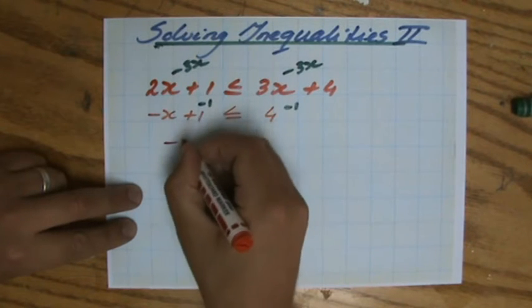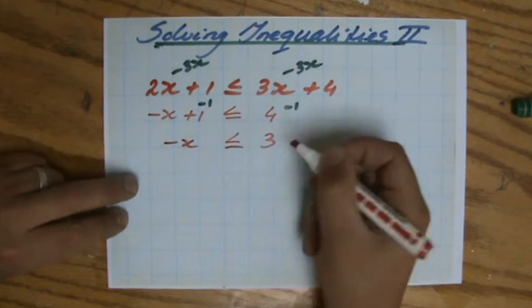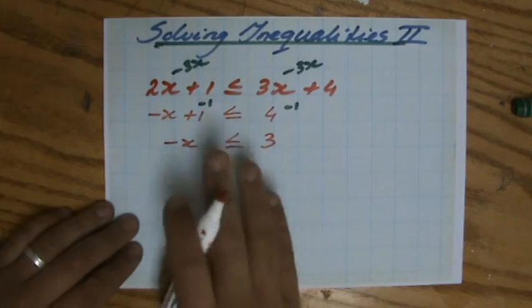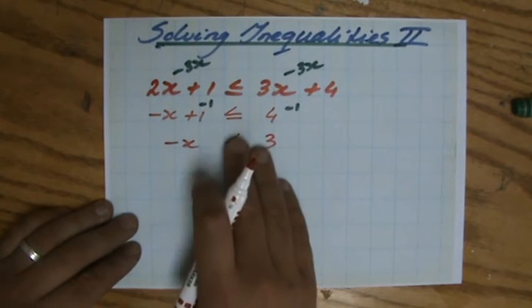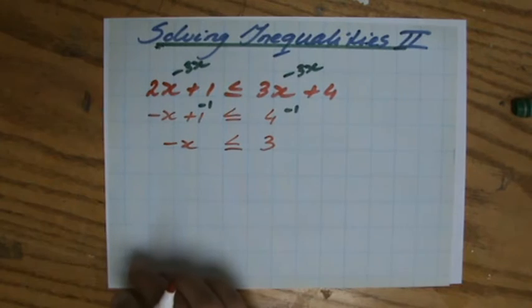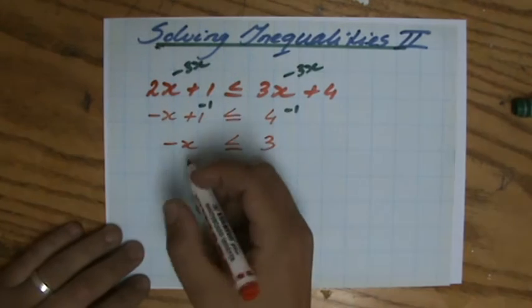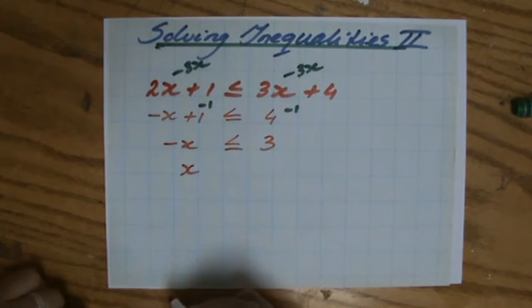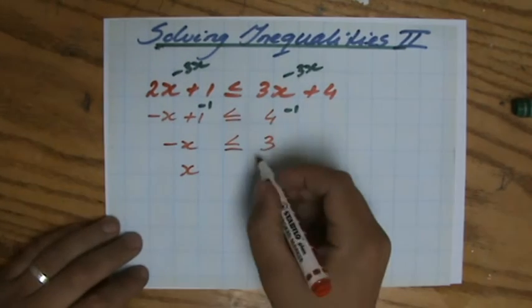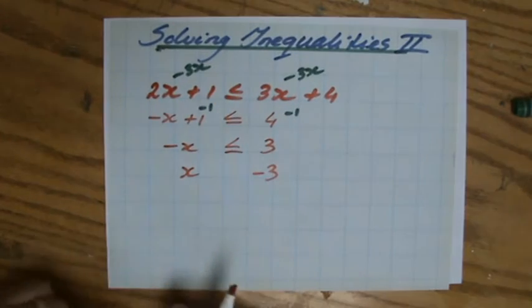Anyway, so it says minus x is 3. Minus x is not 3, by the way. Minus x is smaller or equal to 3. But we're never interested in minus x. We're always interested in x. And the danger now is that you divide by minus 1. So that 3 turns into a minus 3.